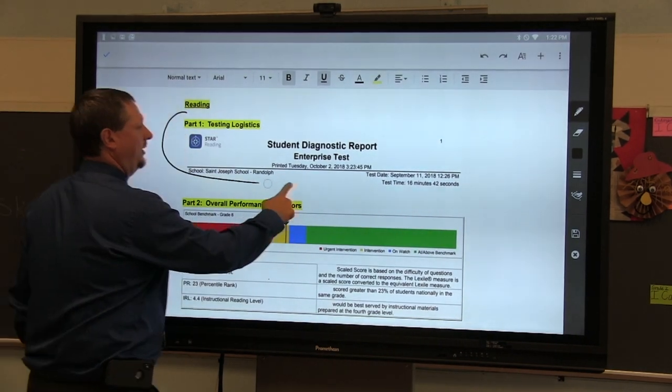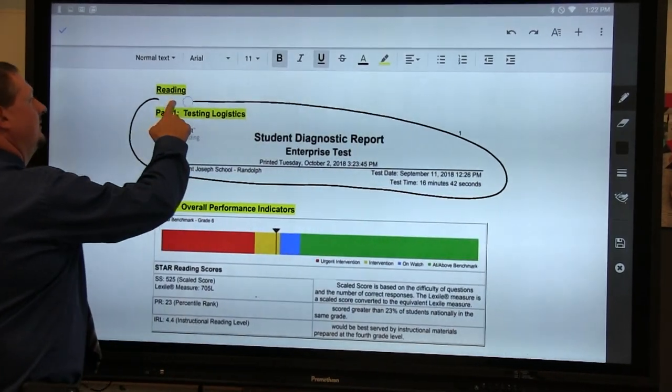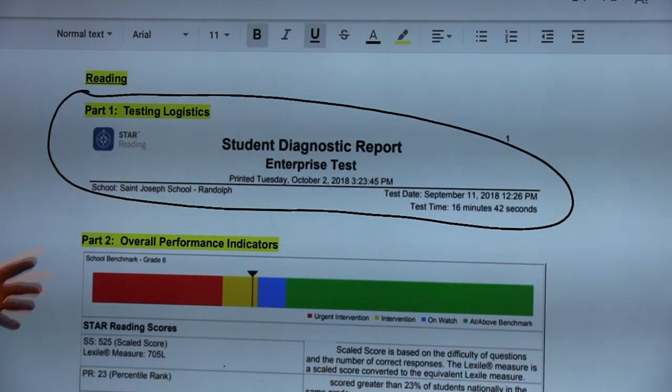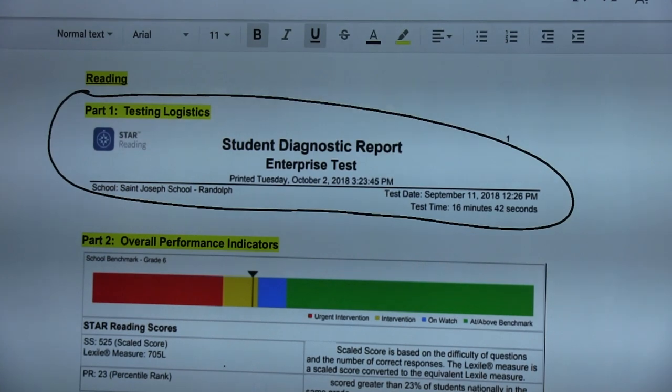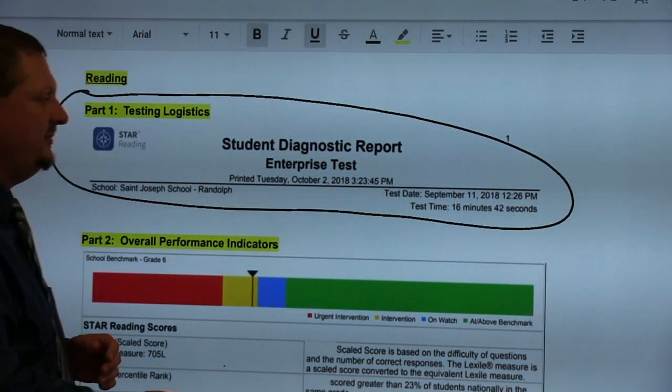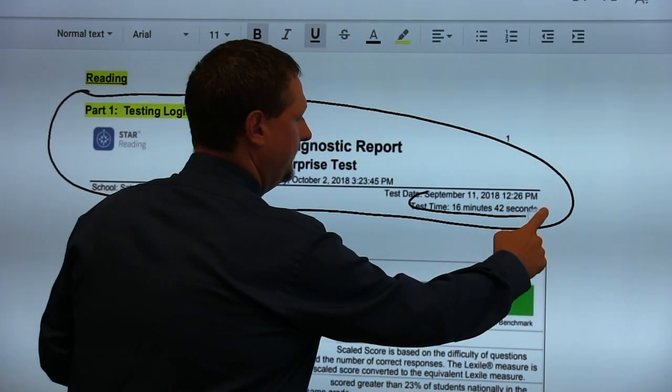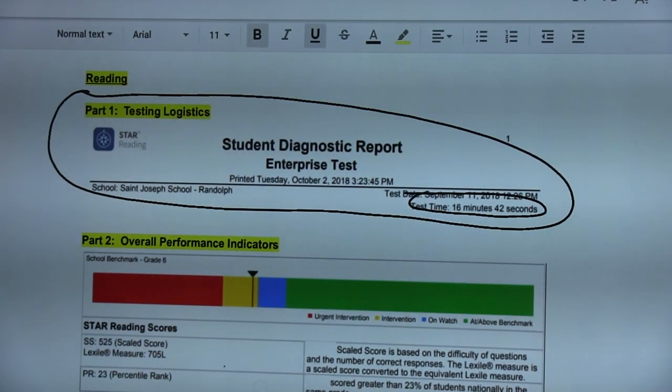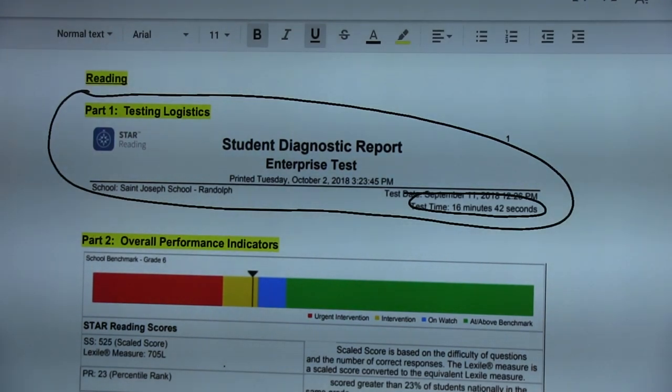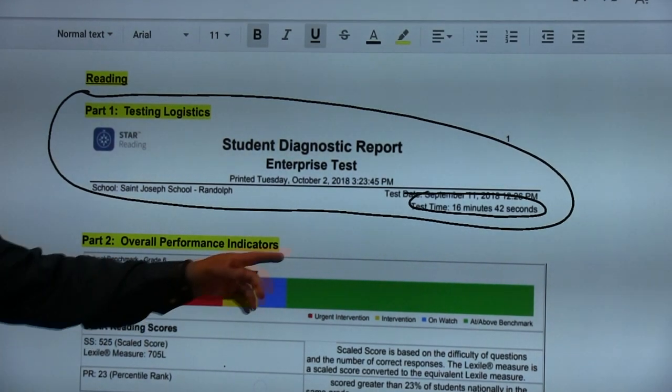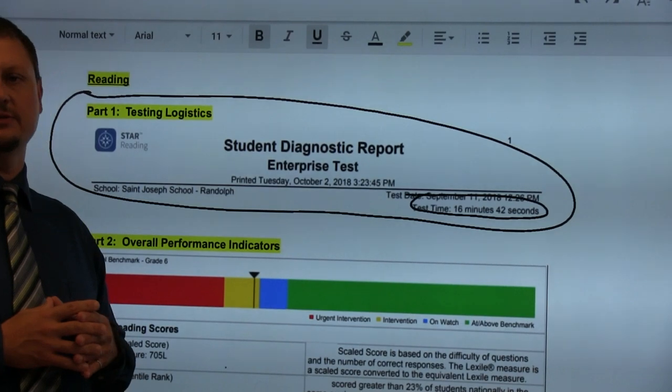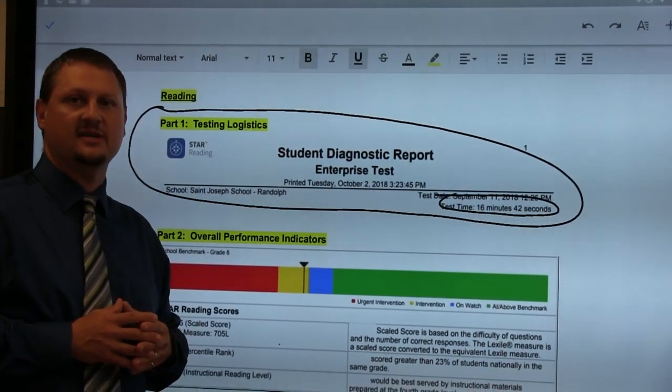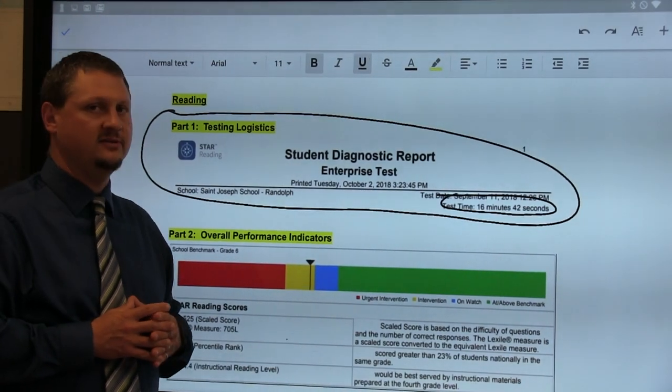This first section or part one I called testing logistics. Now on the surface you may look at that and say well that's pretty mundane information. What does it tell me? Well one of the really big pieces of information it tells me is right here. That tells me how much time this particular student spent on the test. We understand through the research provided by STAR that students that take the English language arts test should take approximately 20 to 25 minutes. As you can see from this student's assessment they took 16 minutes and 42 seconds.